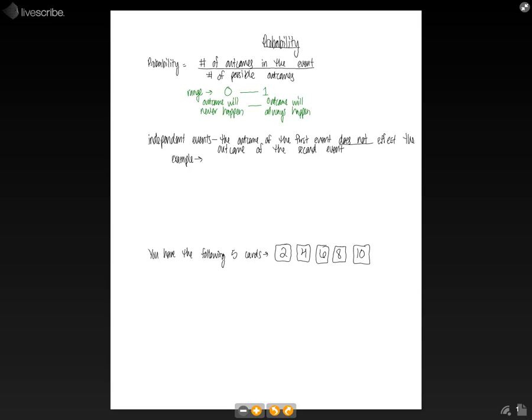It's 100% certain that that event will occur. And so when we look at probability, we can have independent events and dependent events. And we're going to go over independent events in this lesson. And that is defined as the outcome of the first event does not affect the outcome of the second event.